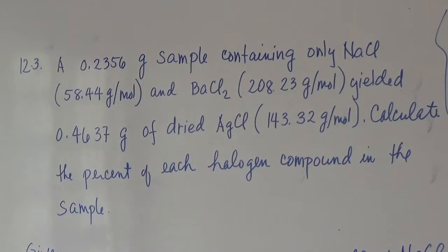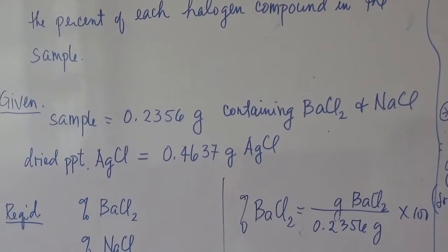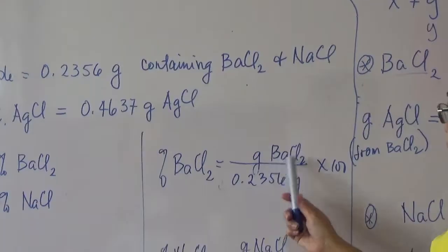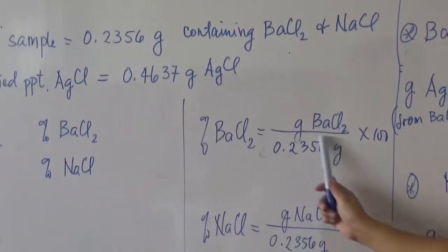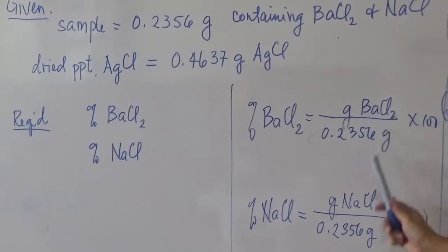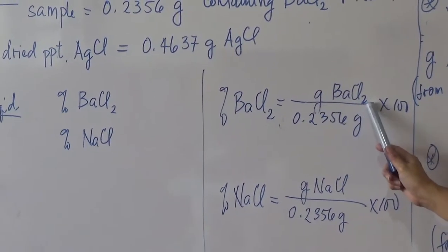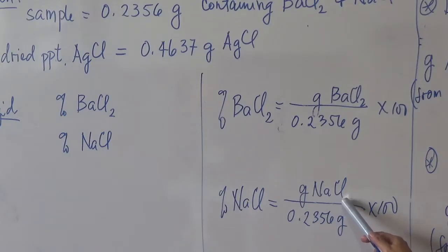Now the problem: we are going to determine the percent barium chloride and the percent sodium chloride from the sample. To solve for the percentage of barium chloride, we must determine the amount of barium chloride in the sample divided by the mass of the sample — 0.2356 — which is composed of barium chloride and sodium chloride. Similarly, we need the amount of sodium chloride to determine the percent sodium chloride.